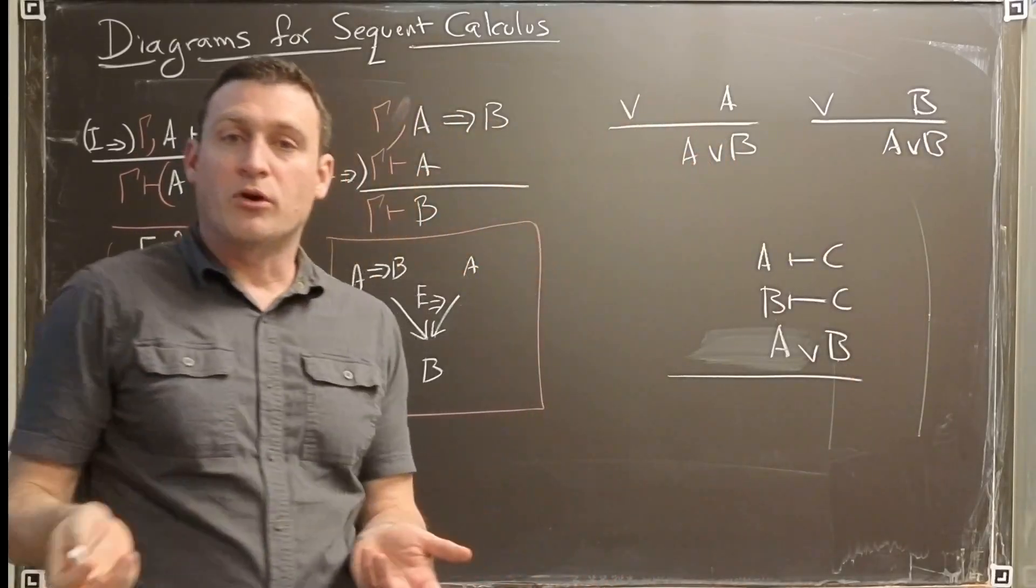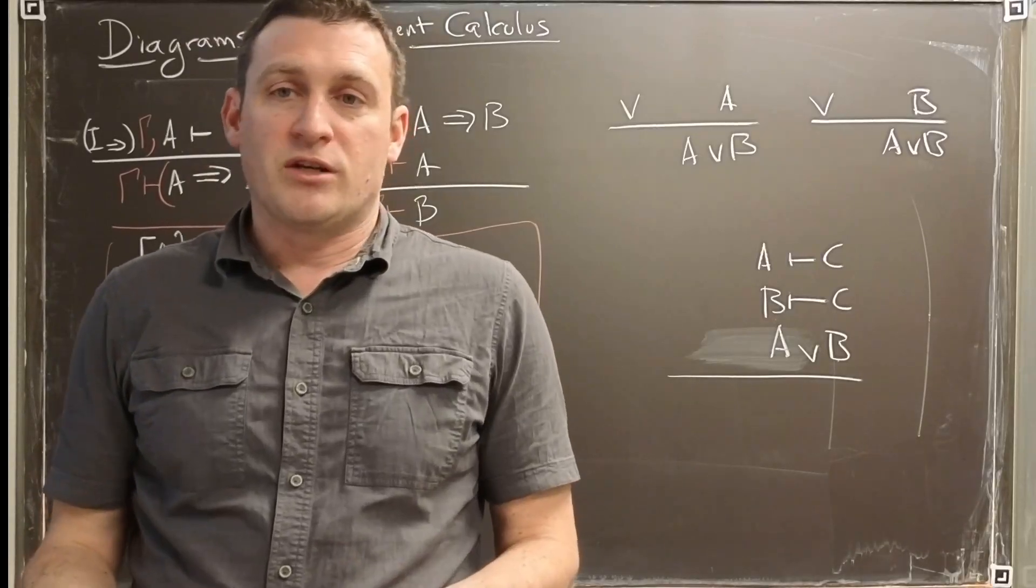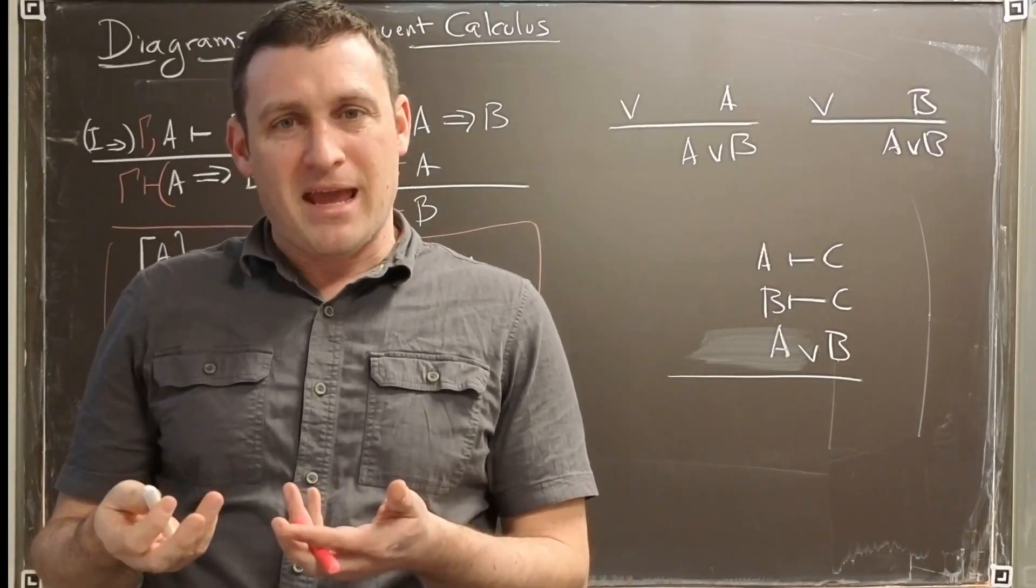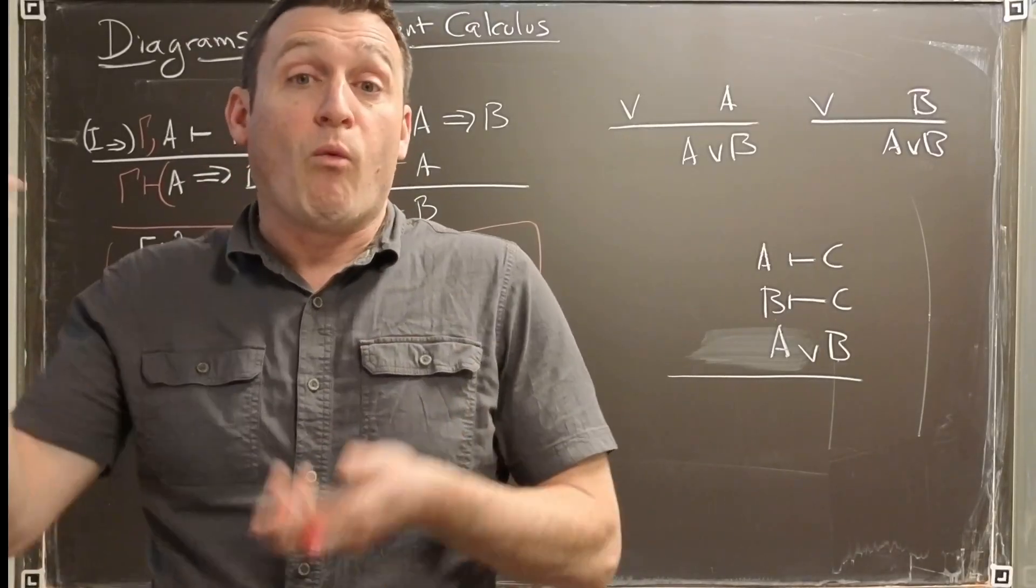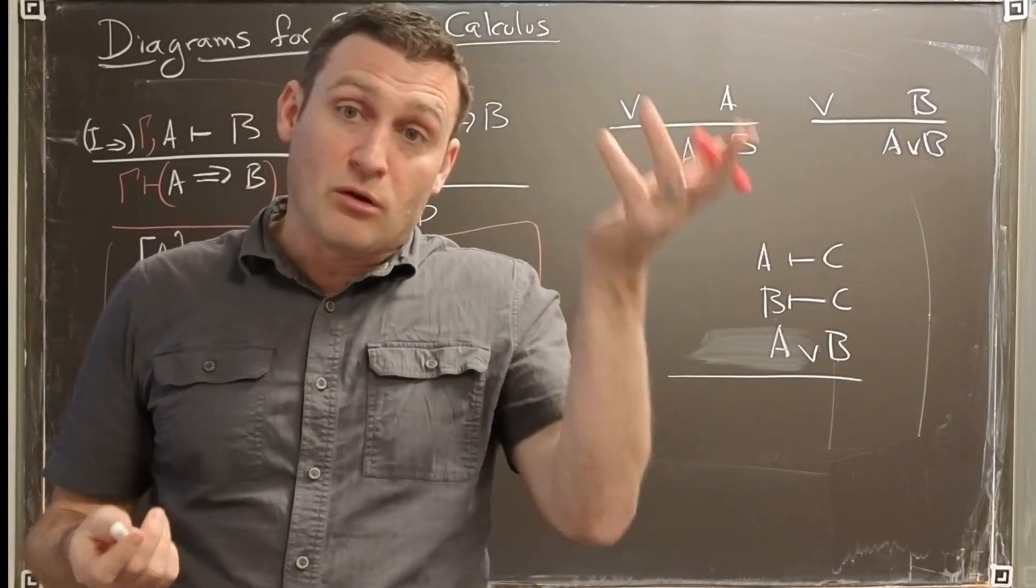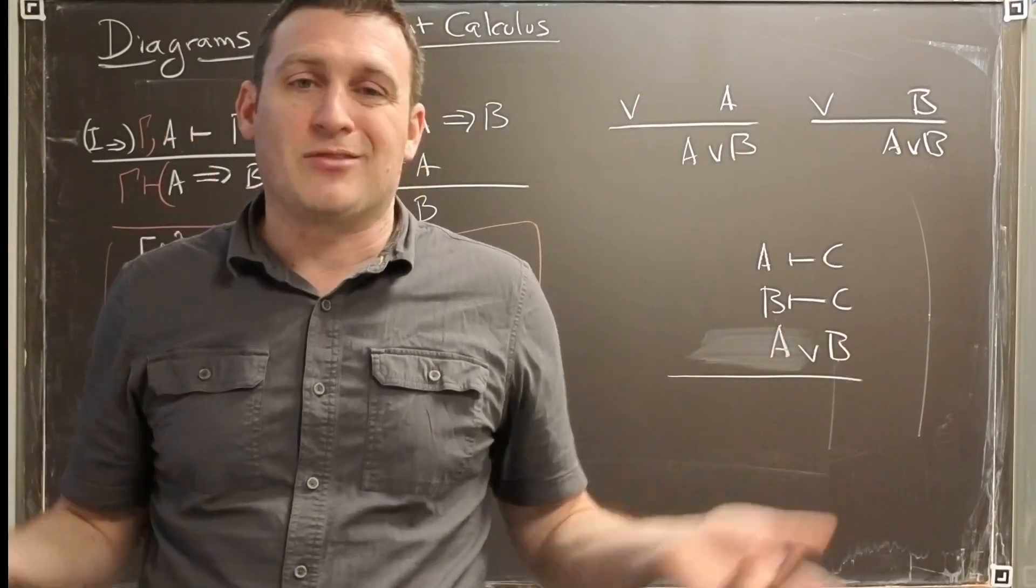The result is that what we're creating here is a language in which we kind of don't know how it got made, but once it's made, we know that one of these two paths was used. Either it was A or it was B, and that's what OR means, right?